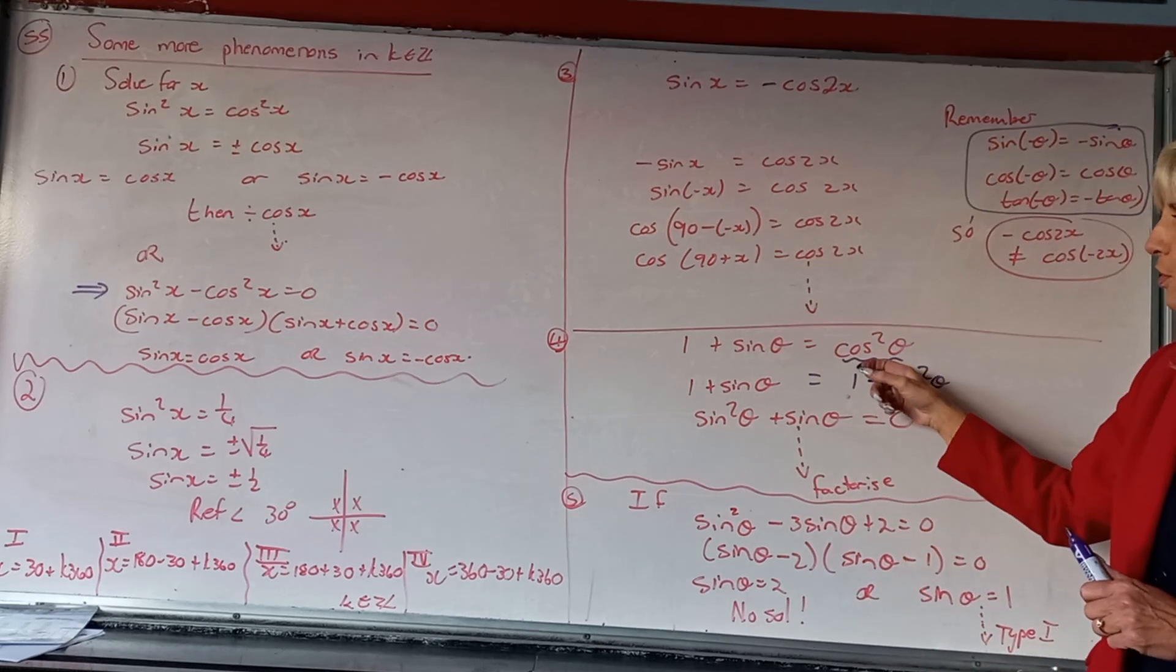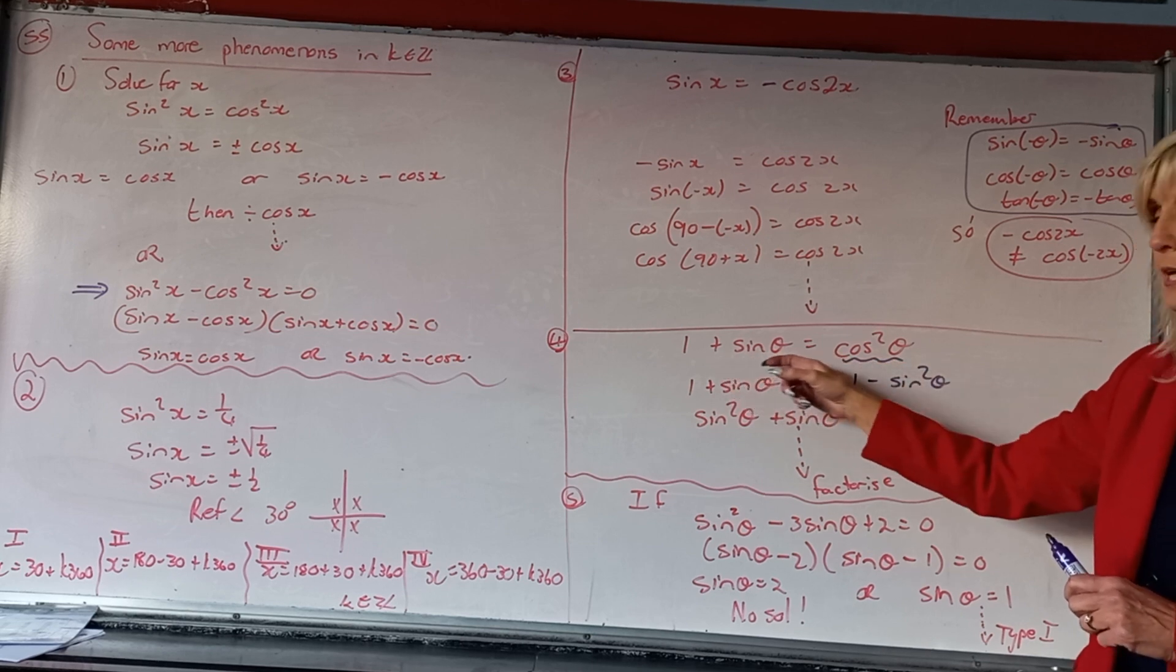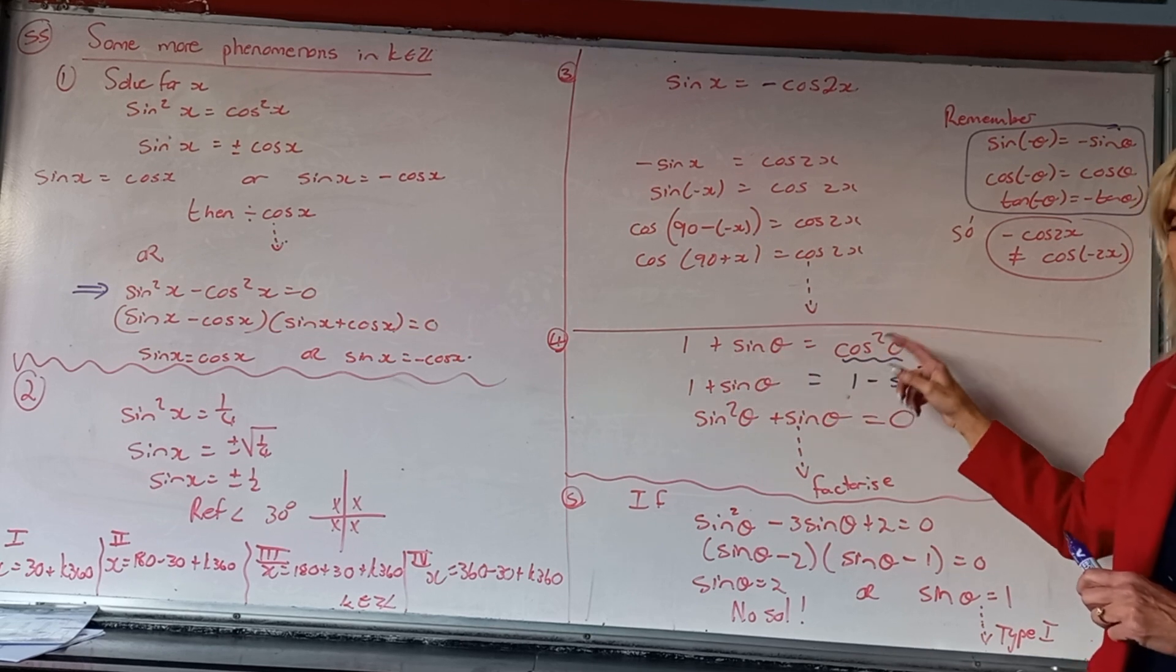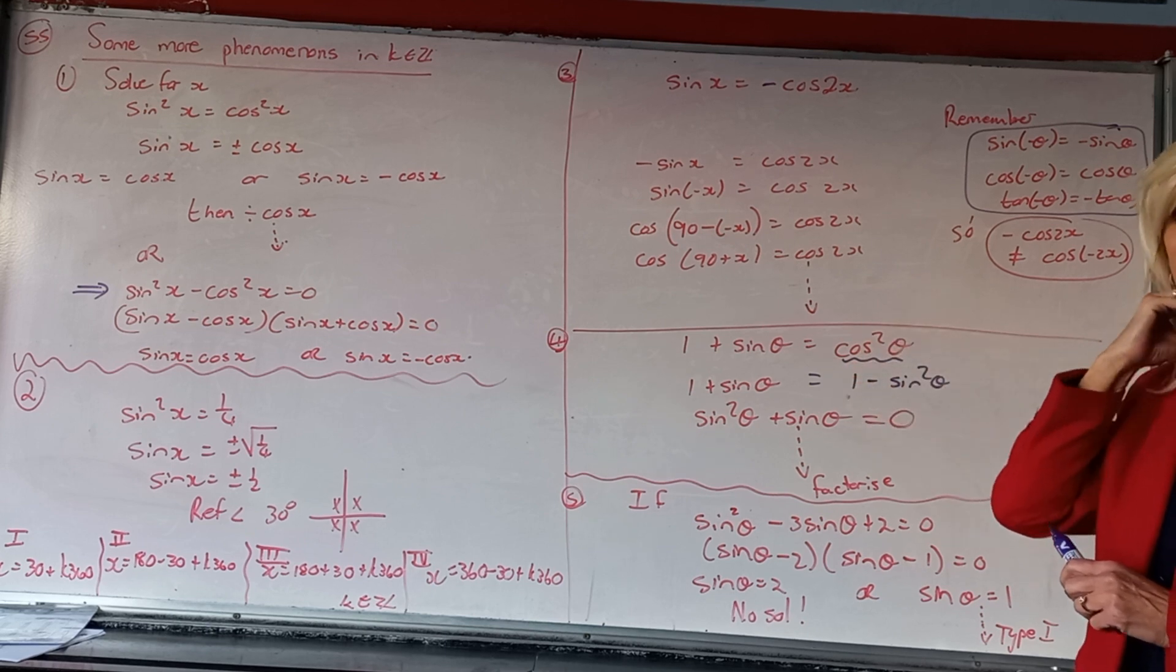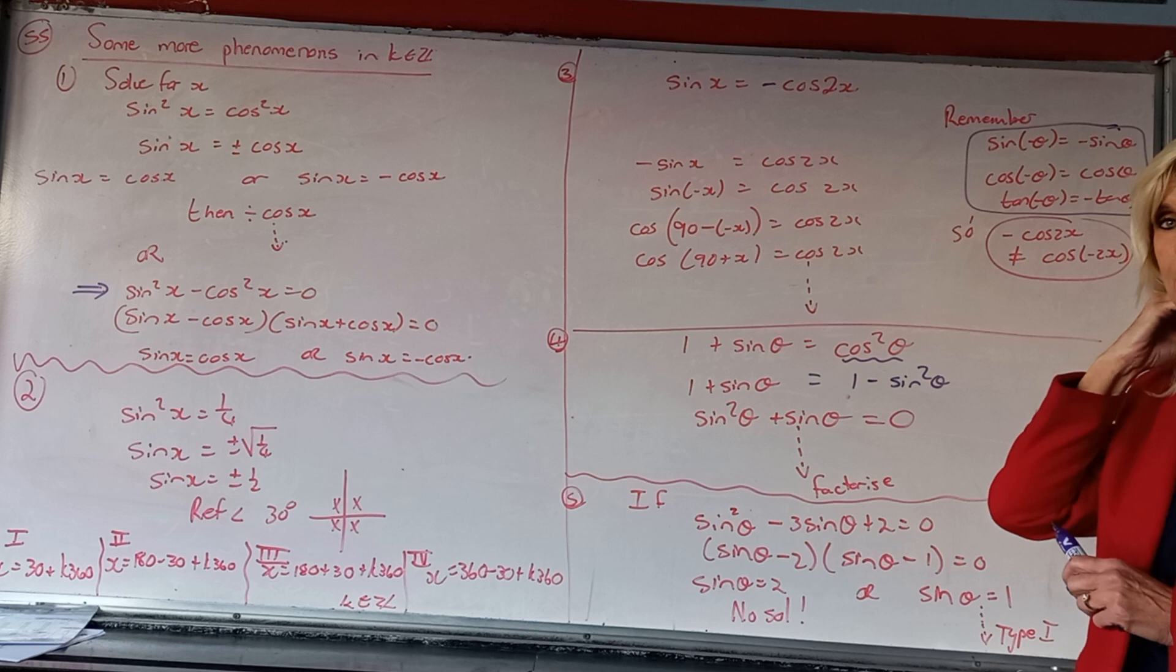Another one is when you've got cos squared, you think it's a type 4 sum, but that's a problem too. When you've got cos squared, you can always substitute it with 1 minus sin squared, or 1 substituted with sin squared plus cos squared.